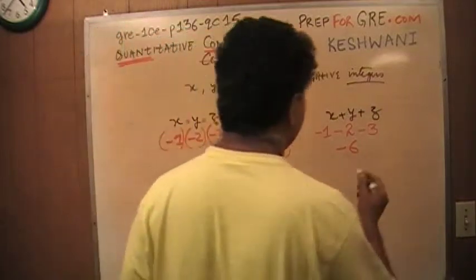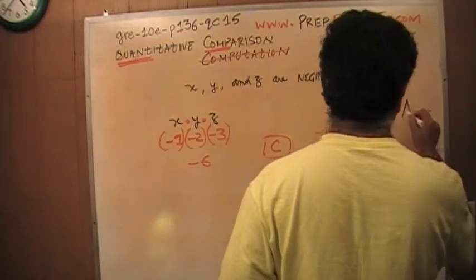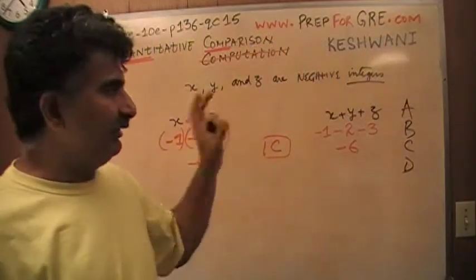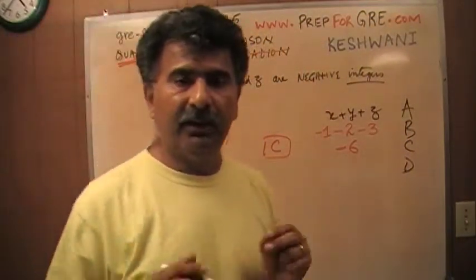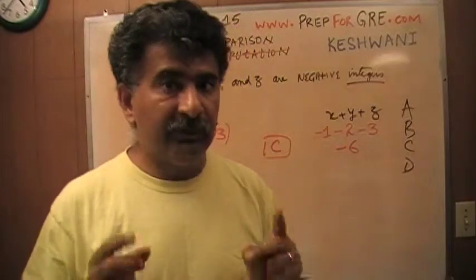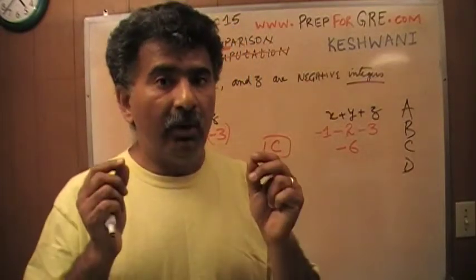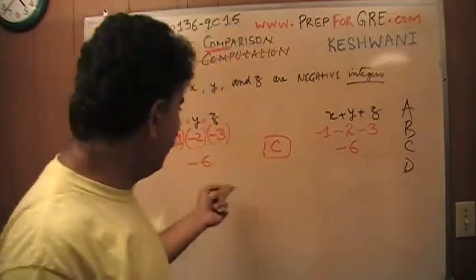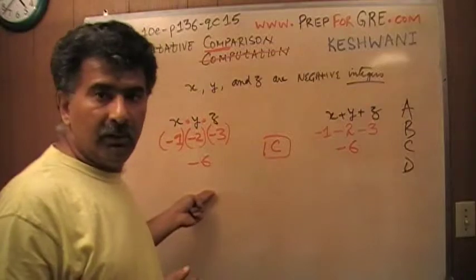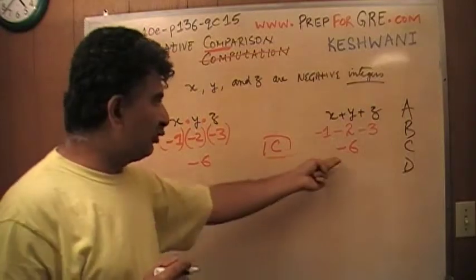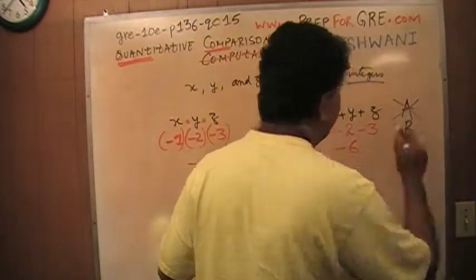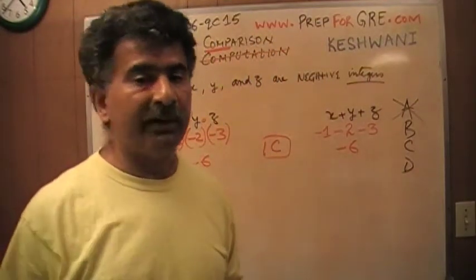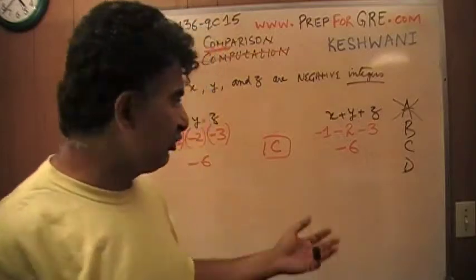There are four possible answers. What are you claiming when you pick A? You're claiming that the quantity in column A is, and here's the keyword, always greater. I now know that A is not the right answer because I found one instance when they are equal.